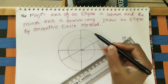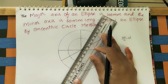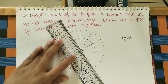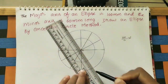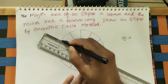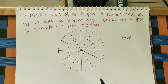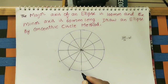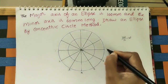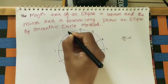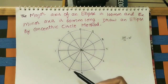Extend each point through the center to complete all 12 division lines. Counting: 1, 2, 3, 4, 5, 6, 7, 8, 9, 10, 11, 12 — we have completed 12 equal divisions.